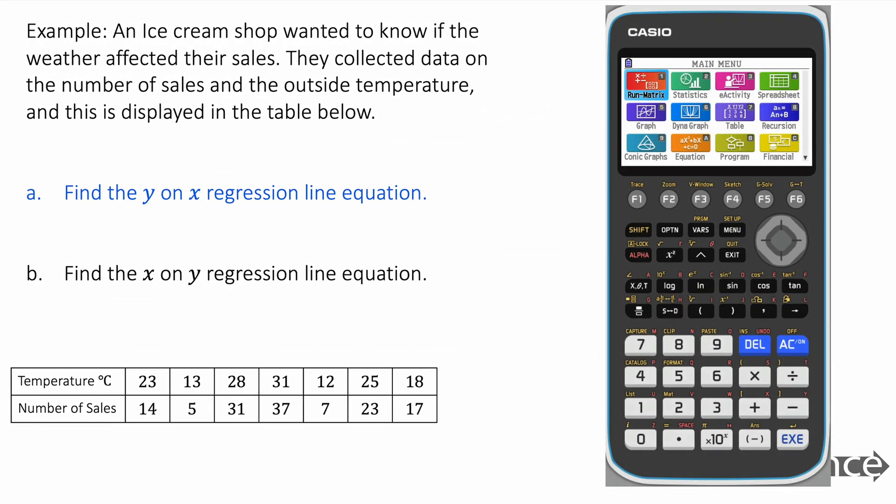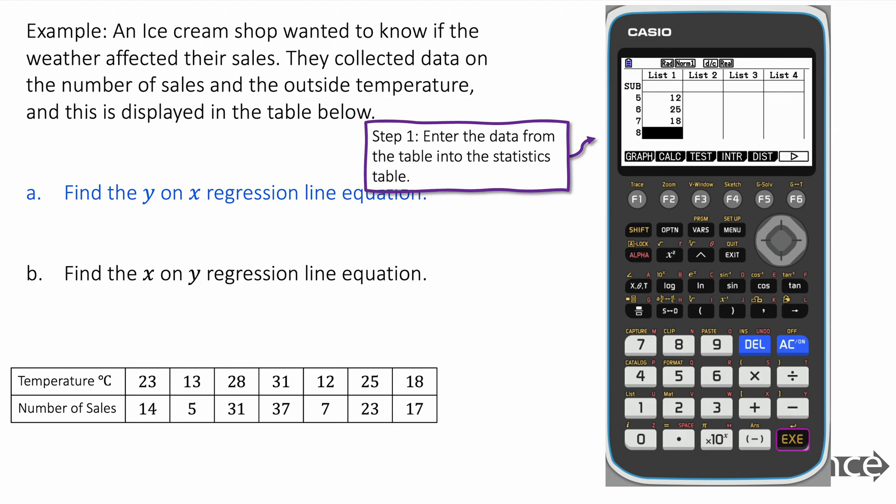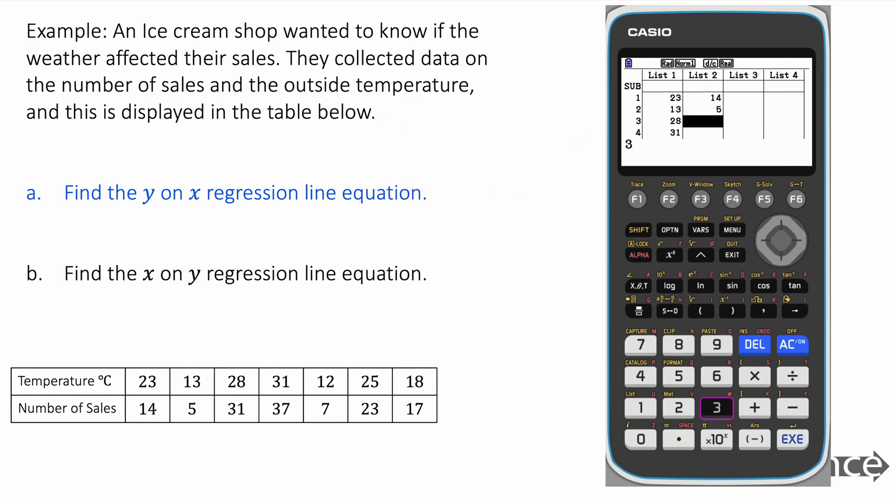So we're going to go to our graphing calculator and we're going to go to statistics and we're going to enter the data from our table into the calculator. You press exe every time to move to the next row, sorry column, and enter it for the temperature. Now you're going to go to the next column by pressing your right and enter the data for the next column in there. We just enter all our data.